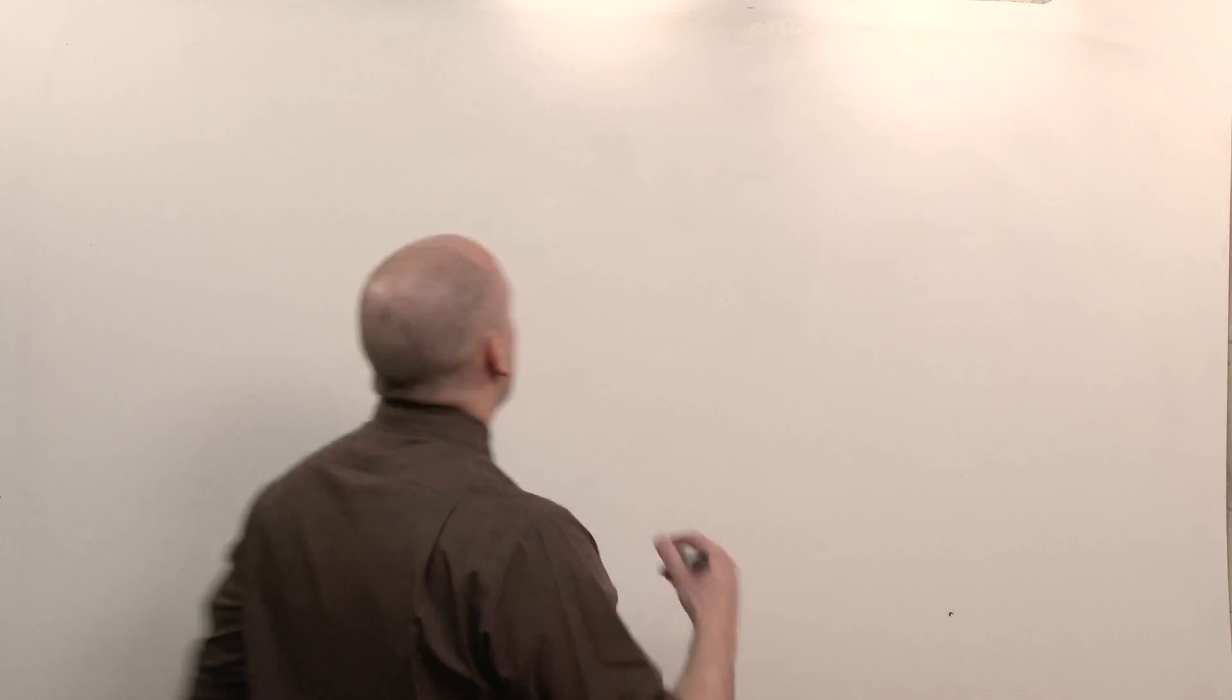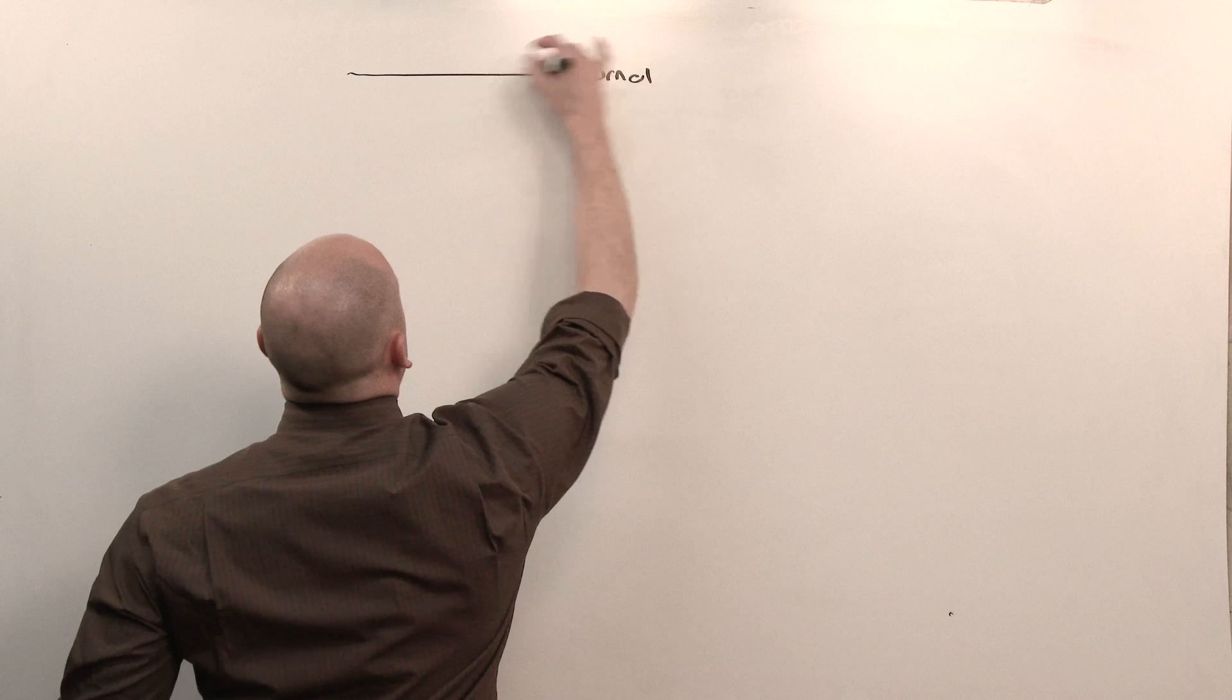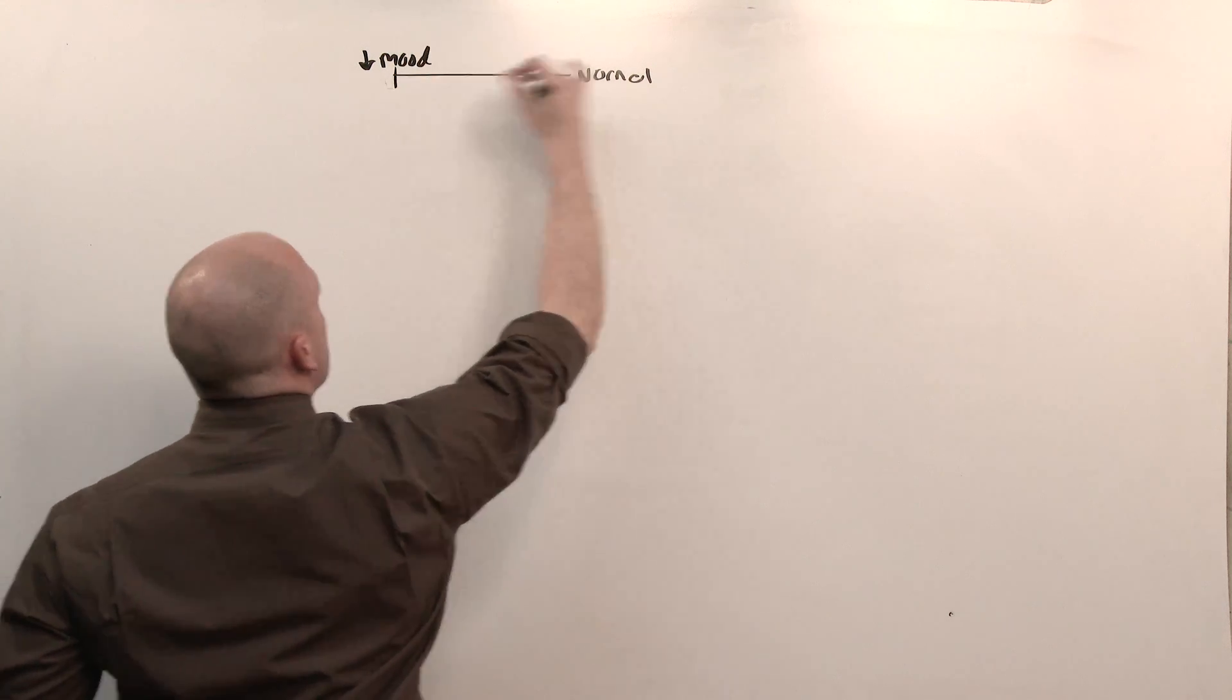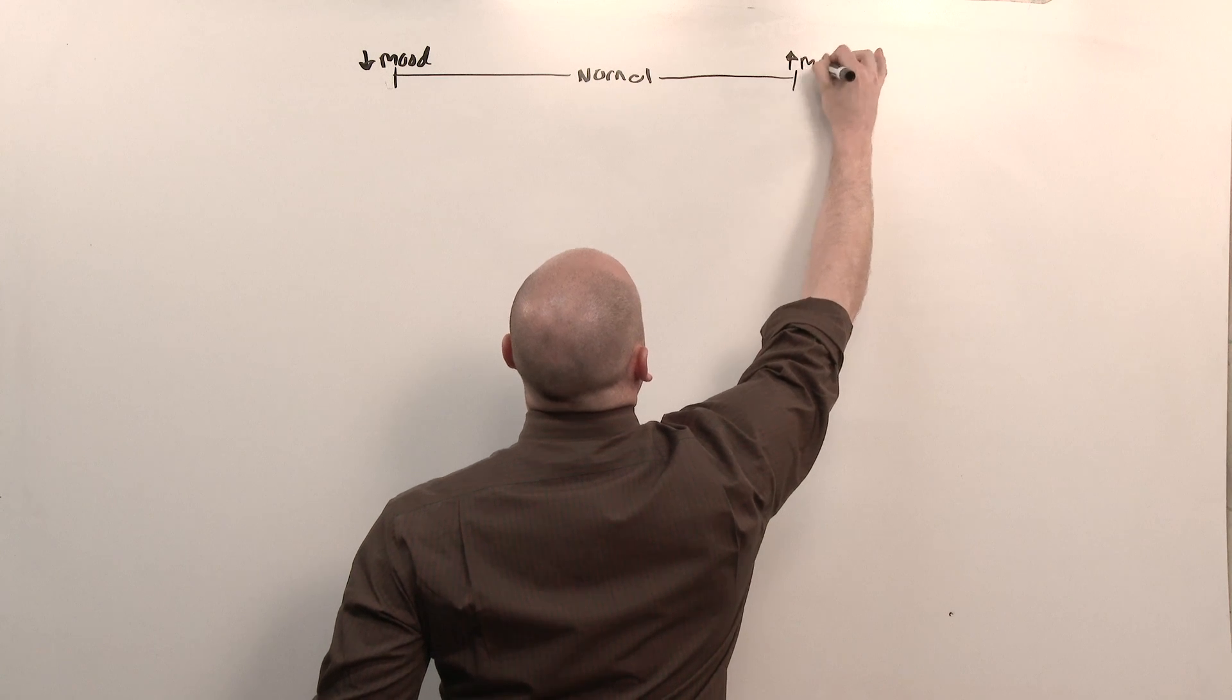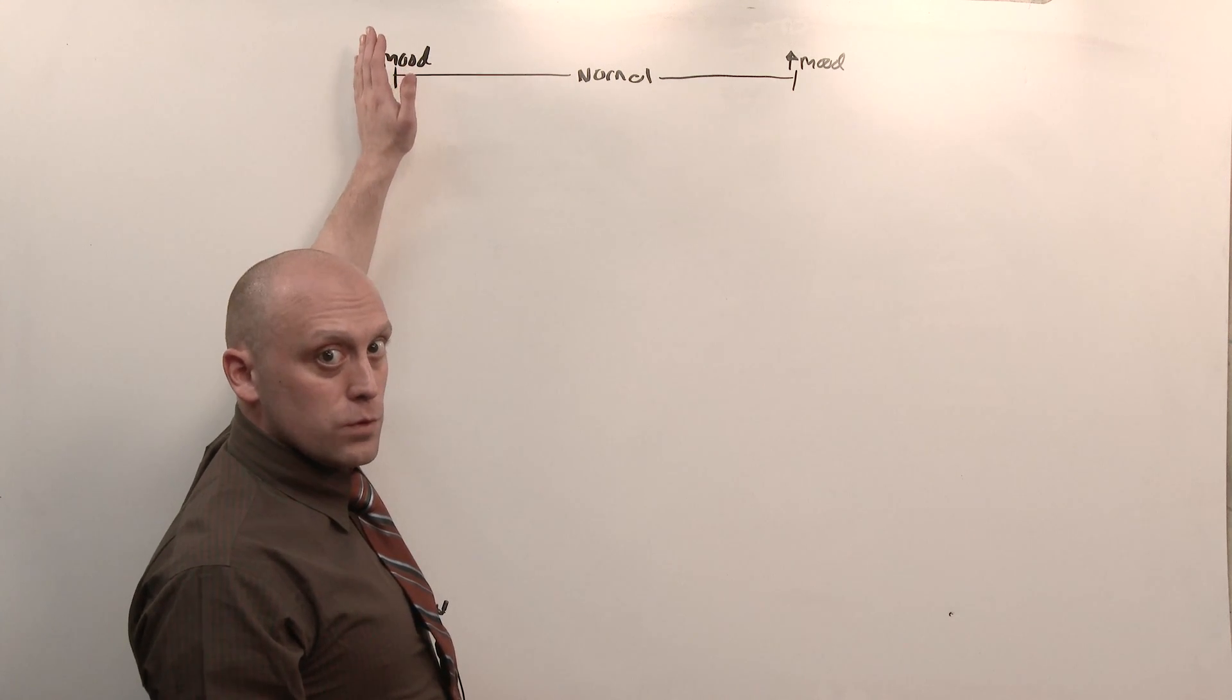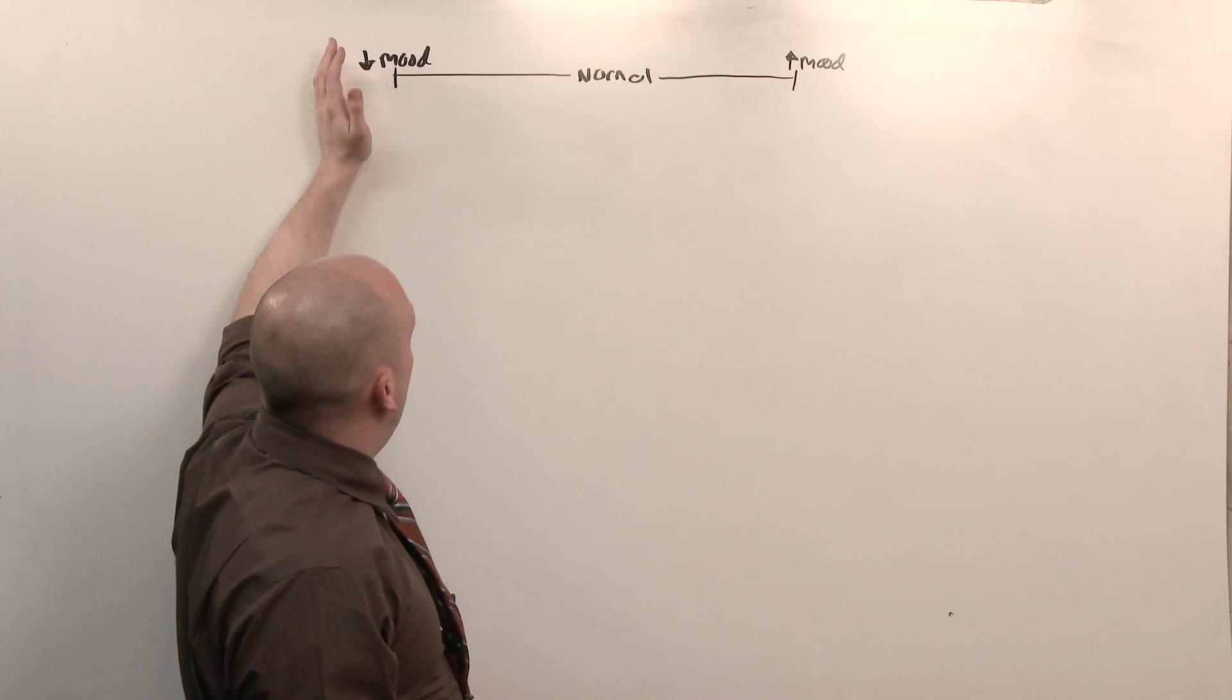I want you to see these diseases on a spectrum. The first spectrum is going up and down. Here's the middle of the board - that's normal. On the left side is depression: moved down, sad, depressed. On this side of the board, it's moved up. Way over here on the left, nothing moves. It's super slow, the mood is depressed, no one's happy.